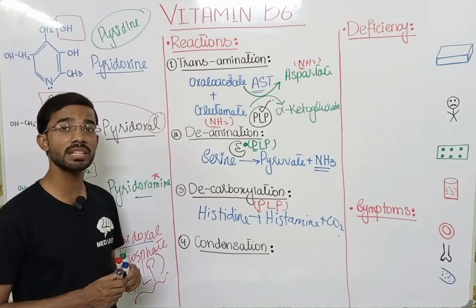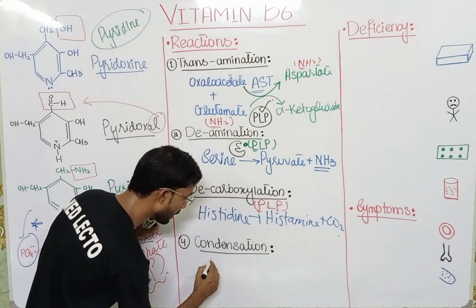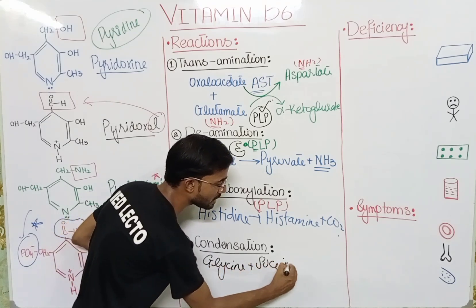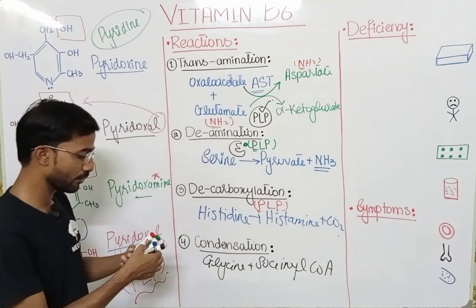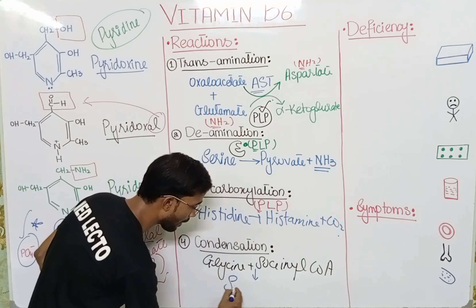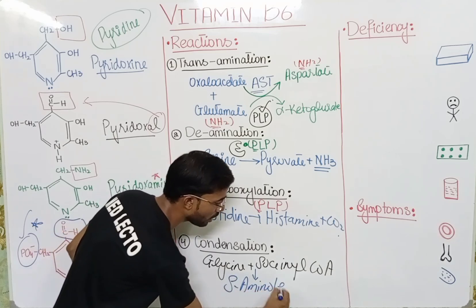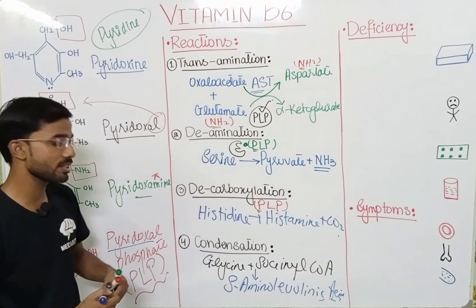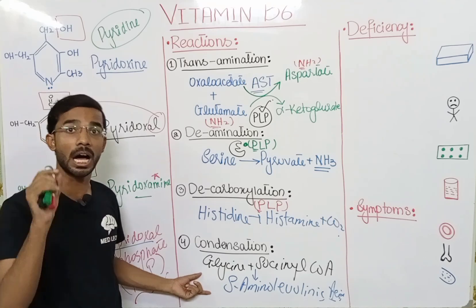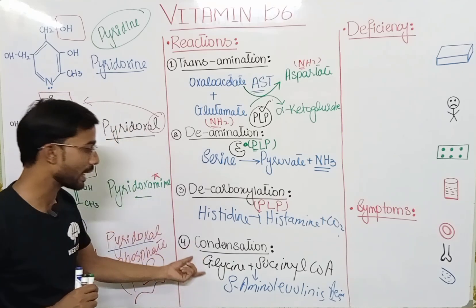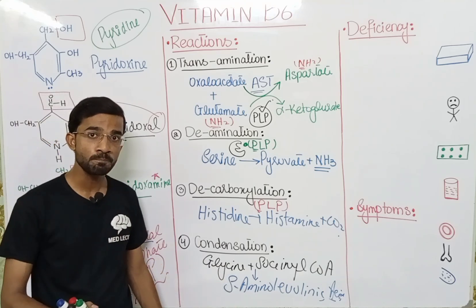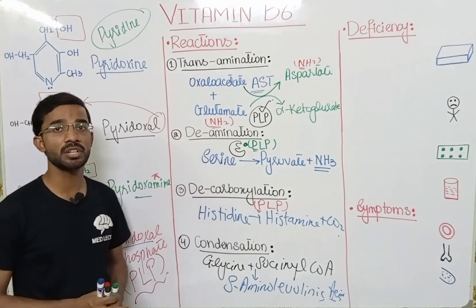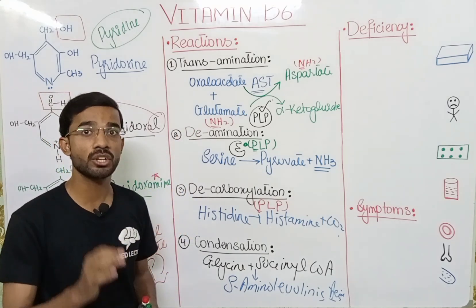Condensation reaction: two compounds combine. Glycine will combine with succinyl-CoA, and it will result in the formation of gamma-aminolevulinic acid. This reaction actually happens in RBCs in the formation of hemoglobin. Again in this reaction, Pyridoxal phosphate will be the coenzyme. So these are basically the different reactions in which Pyridoxal phosphate acts as a coenzyme.